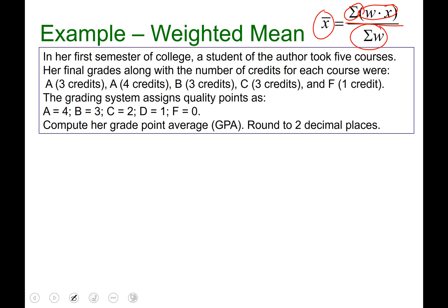In her first semester of college, a student of the author took five courses. Her final grades came along with the number of credits for each course worth. She got an A in a class that was worth three credits. So A is the x, if you will, and W is the weight, three-unit class. She got an A in a four-unit class, so we're going to have another x, which x is going to equal four, because every A is worth four credits. And then W is going to be the four units.